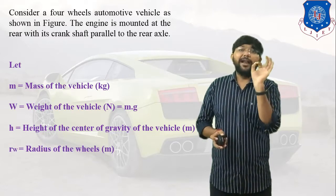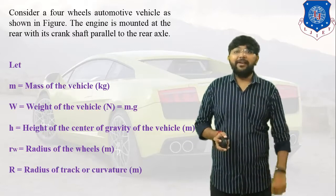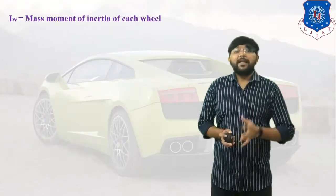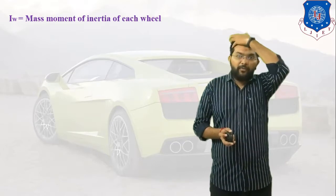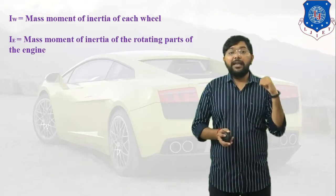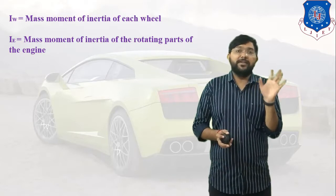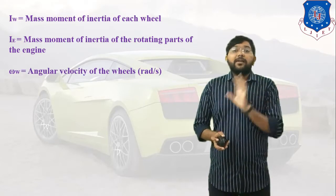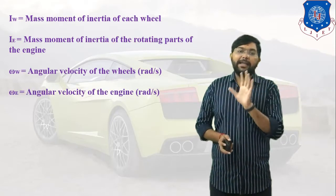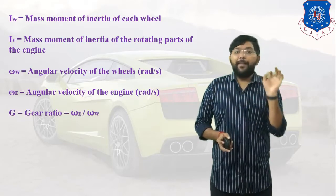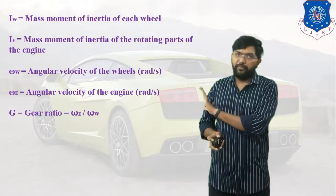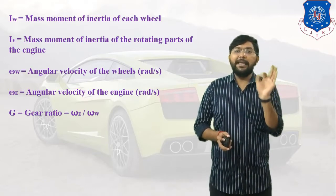Small rw is the radius of the wheel. Capital R is the radius of curvature of the track. Capital Iw indicates the mass moment of inertia of each wheel. Capital IE indicates the mass moment of inertia of the rotating parts of the engine — including the flywheel and crankshaft. Omega W indicates the angular velocity of the wheel, and Omega E indicates the angular velocity of the engine.